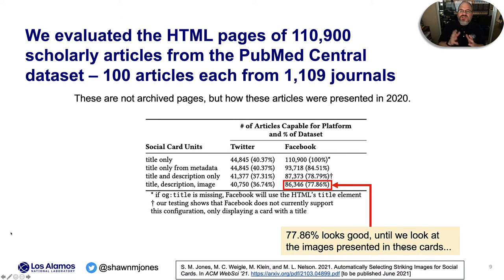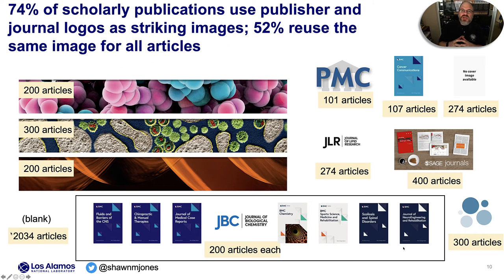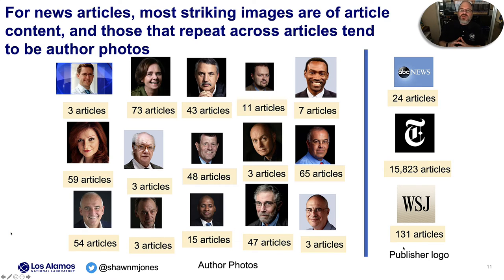We evaluated the HTML pages of 110,900 scholarly articles — 100 articles each from 1,109 journals. We found that 77.86% of them can produce a title, description, and image on Facebook. However, 74% of scholarly publications use publisher and journal logos as striking images, and 52% reuse the same image for all of their articles. This is not summarizing the underlying content — this is advertising for the journal or publisher. For news articles, most striking images are of article content, and those that repeat tend to be author photos.